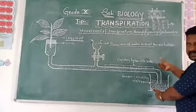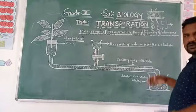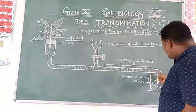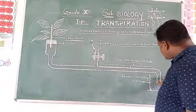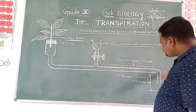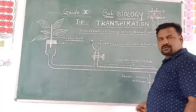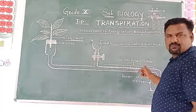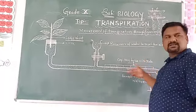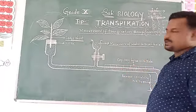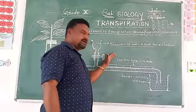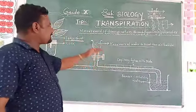The bent portion of the capillary tube is then slightly lifted upward, and then placed back down into the beaker containing water. When we lift the bent portion of the capillary tube, pressure is developed due to the development of water movement, and that pressure starts pulling the water. After this setup is complete, the entire apparatus is placed under sunlight.